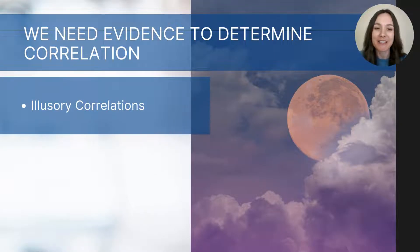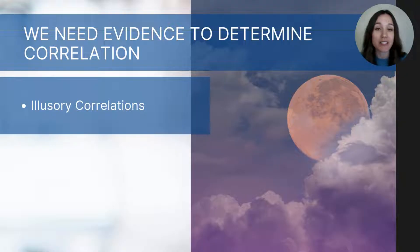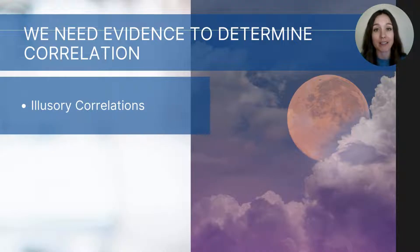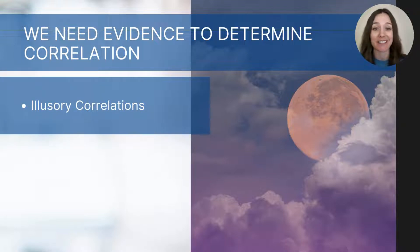We need evidence to help us determine if correlations exist between variables. We know that humans have the tendency to be overconfident in our assumptions, to perceive patterns in random events, and to fall for the confirmation bias — we are vulnerable to biases. Another bias to add is the illusory correlation, which is a perception of a relationship between two variables when one doesn't exist. A great example of this is the belief that there's a connection between full moons and erratic behavior.